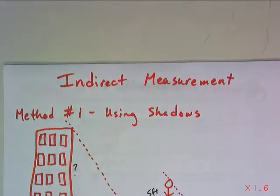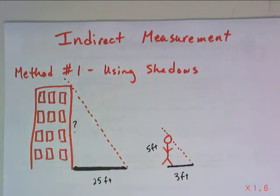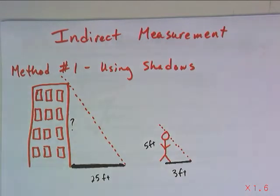Next. Indirect measurement. There are three ways that we can measure things indirectly, meaning it's too hard for us to actually measure the thing itself to get a ruler, to get a tape measure or something, right up next to what it is that we want to measure, often because it is too tall or large or too awkward to measure. So we can measure it indirectly using some similar figures.